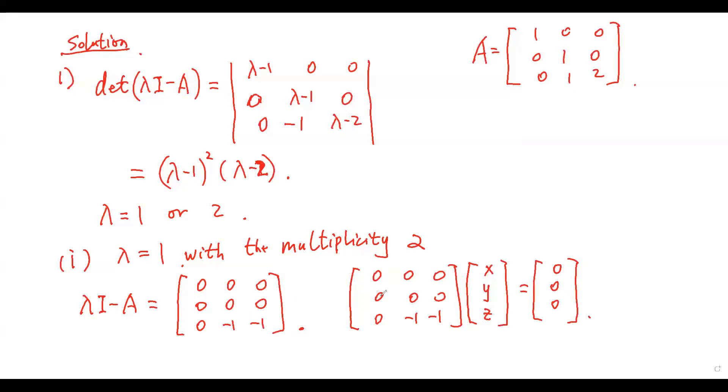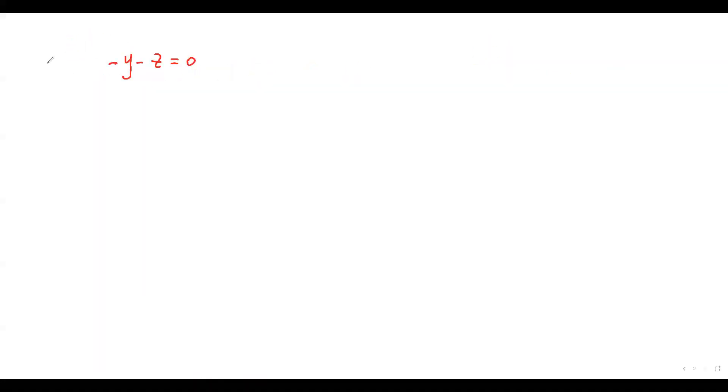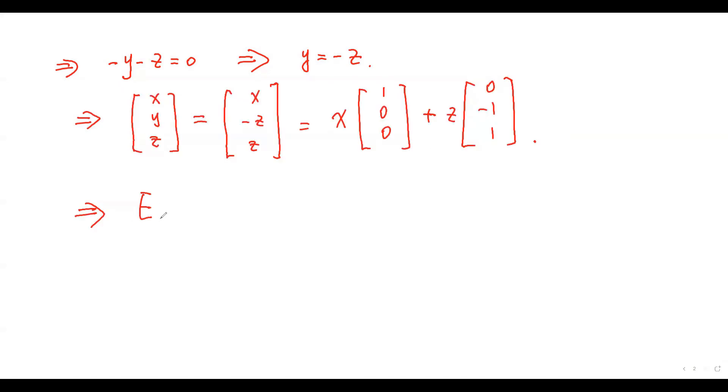Consider the equation this one. The augmented matrix for this equation is that one. This gives this solution, and this one is Y equals minus Z. Then the solution equals that one.